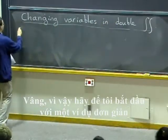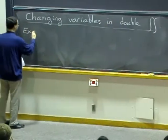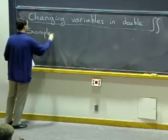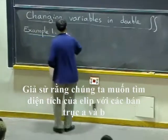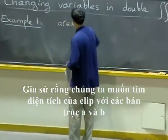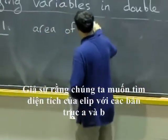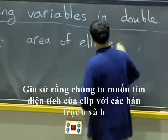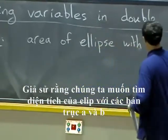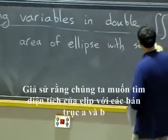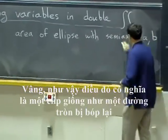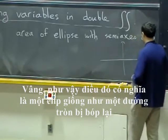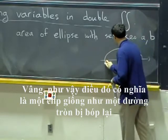OK, so let me start with a simple example. Let's say that we want to find the area of an ellipse with semi-axes a and b. OK, so that means an ellipse is just like a squished circle.